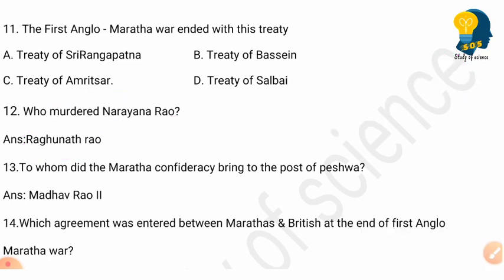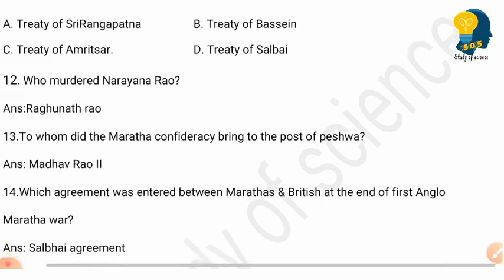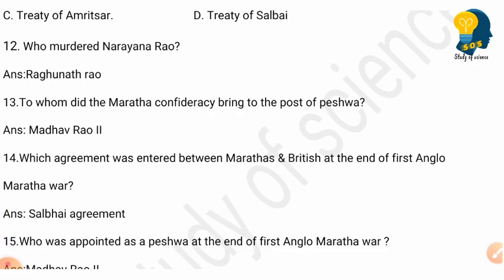Question 12: Who murdered Narayan Rao? Answer: Raghunath Rao. He was the one who murdered Narayan Rao. Question 13: To whom did the Maratha confederacy bring to the post of Peshwa? Answer: Madhav Rao Second.